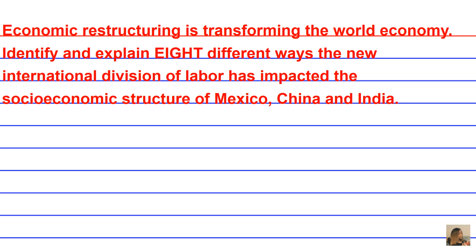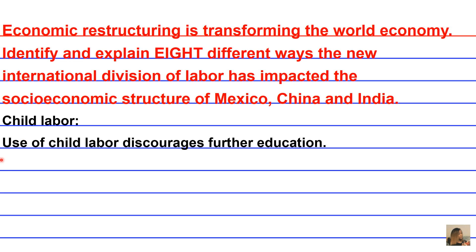A fourth way the socioeconomic structure of Mexico, China, and India has been impacted is through child labor. Use of child labor discourages further education. Once people start making money, they're not necessarily interested in education, especially in developing nations where money is scarce. In contrast to the United States, in other nations children are sometimes seen as a necessity to provide income.